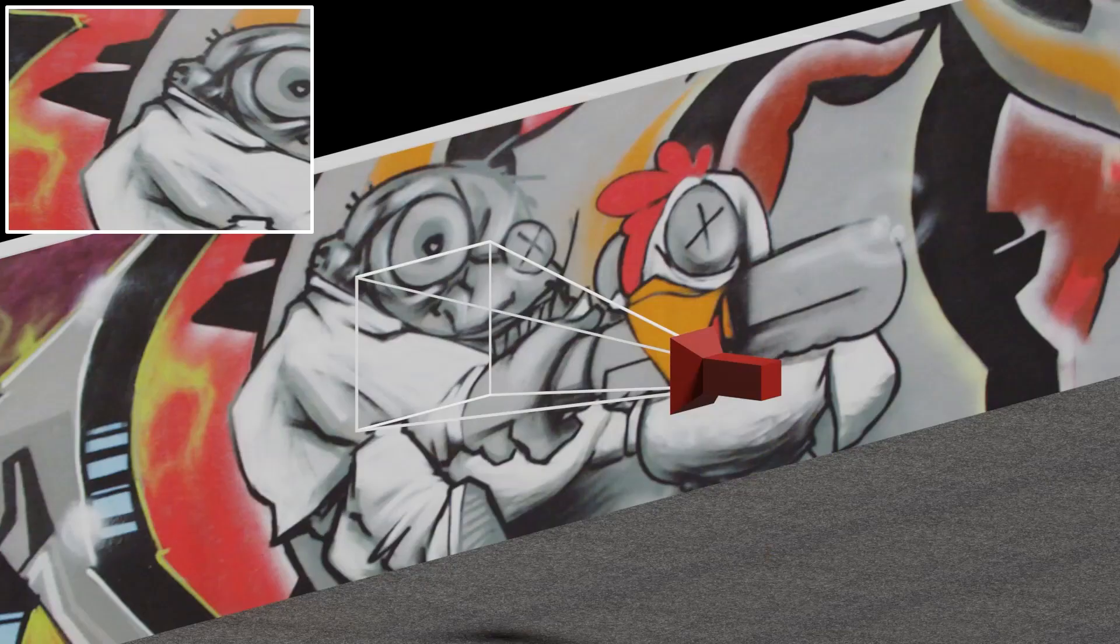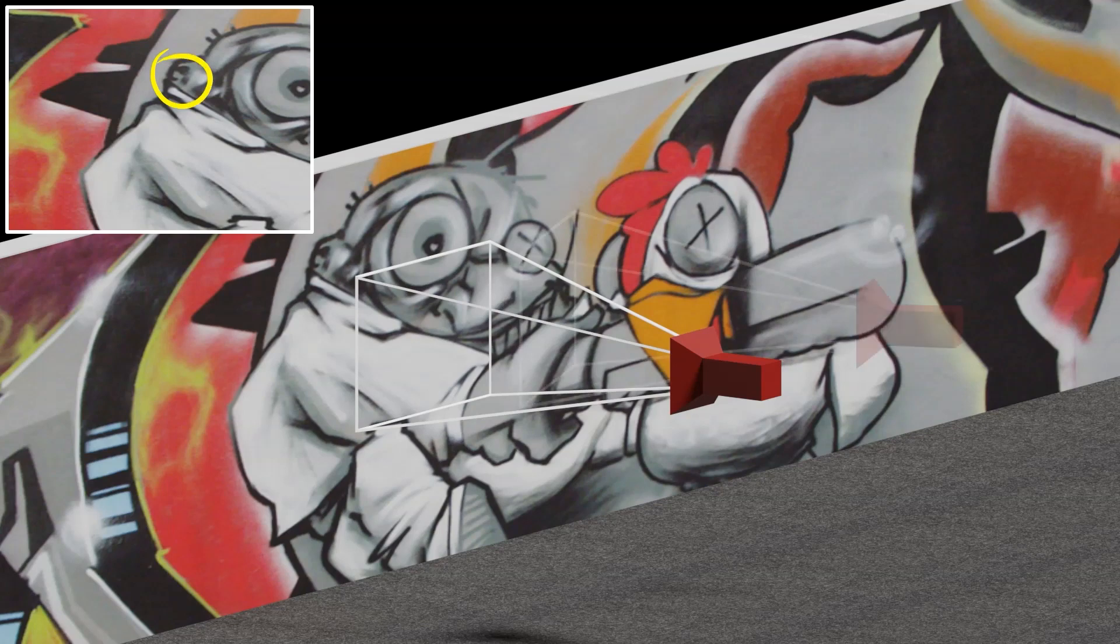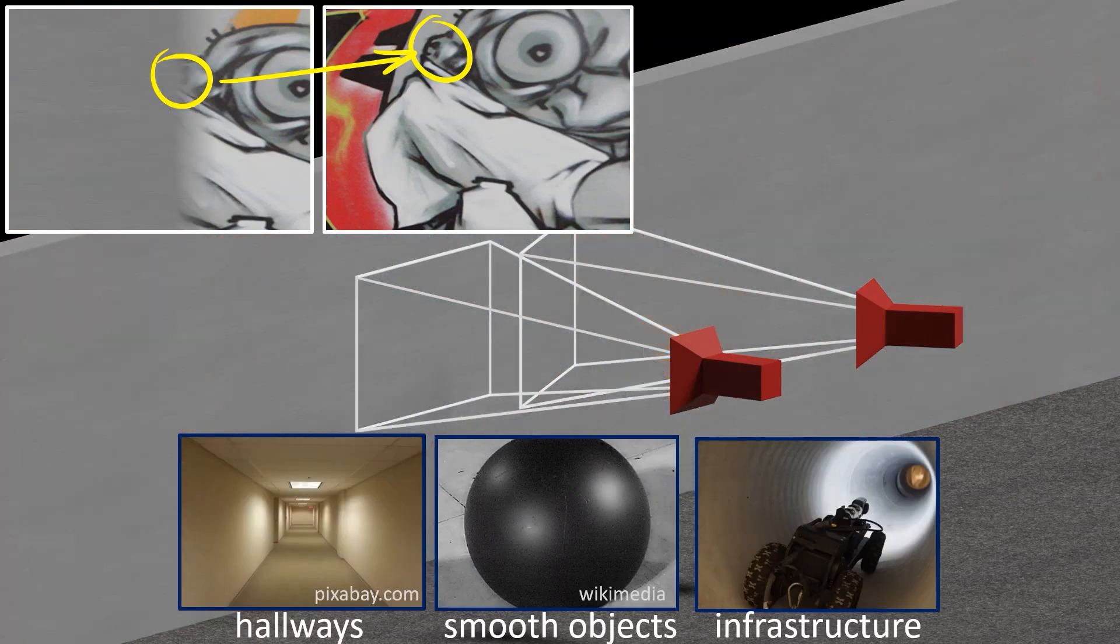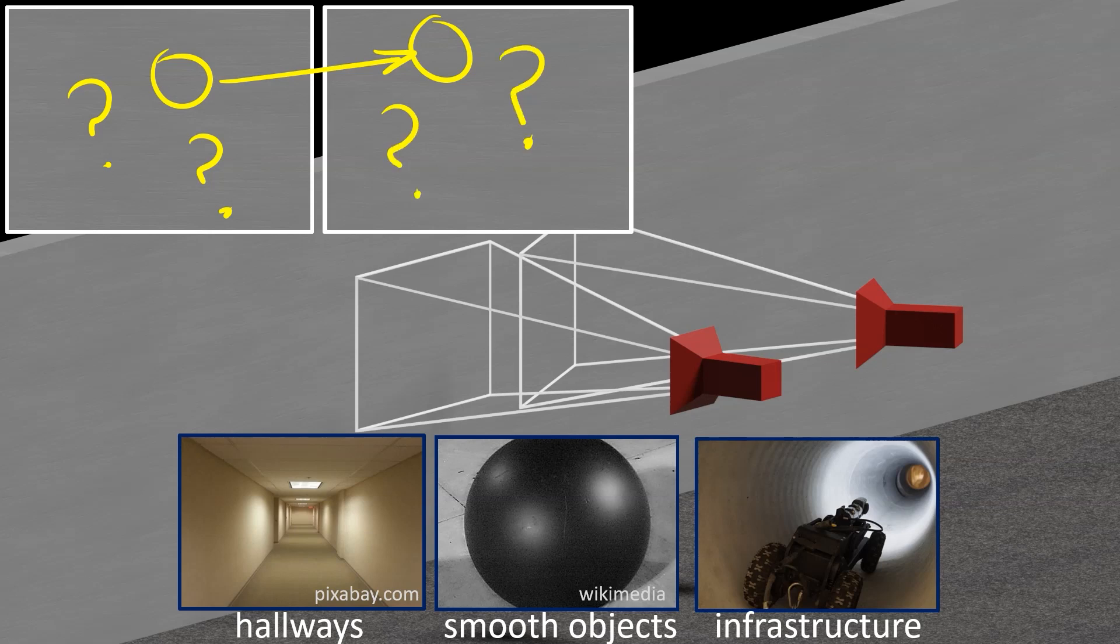The ability to recognize the same pattern from different views is fundamental for dynamic vision tasks like structure from motion and object tracking. But many parts of our environment simply do not have enough distinct features to complete this task.